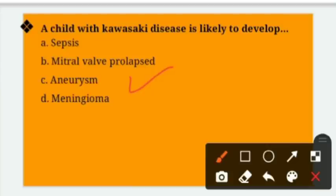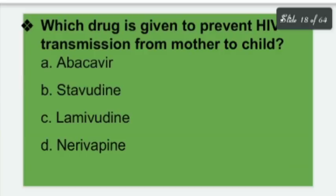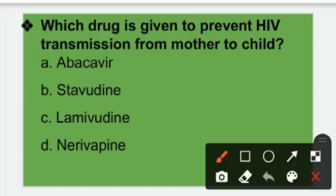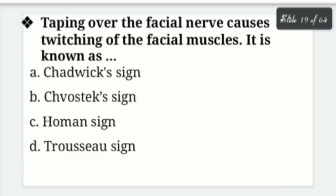Which drug is given to prevent HIV transmission from mother to child — mother se child mein HIV transmission ko prevent karne ke liye kaun si drug di jati hai? Options: Abacavir, Stavudine, Lamivudine, Nevirapine. Right answer is option D — Nevirapine. Note: the spelling shown on screen may say 'Nebirepin' but the correct drug is Nevirapine, given to prevent HIV transmission from mother to child.